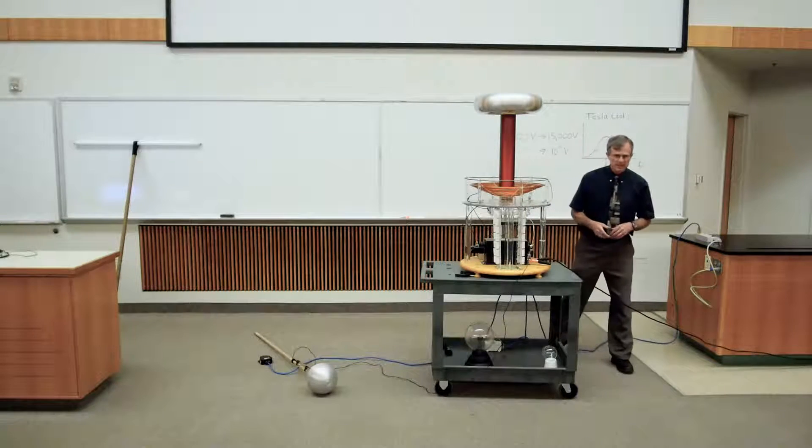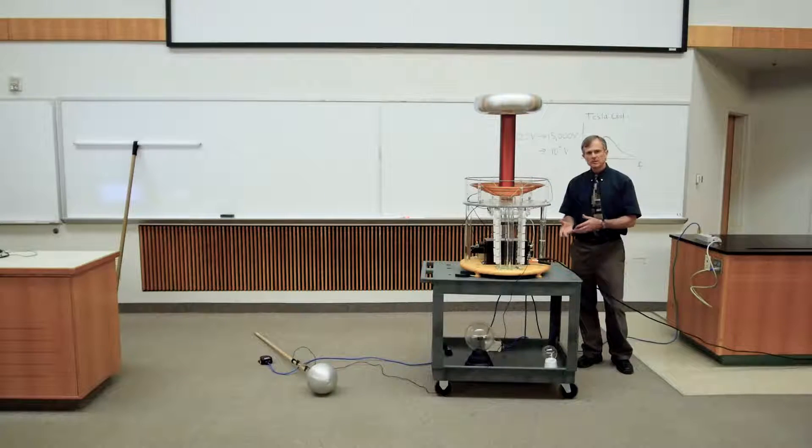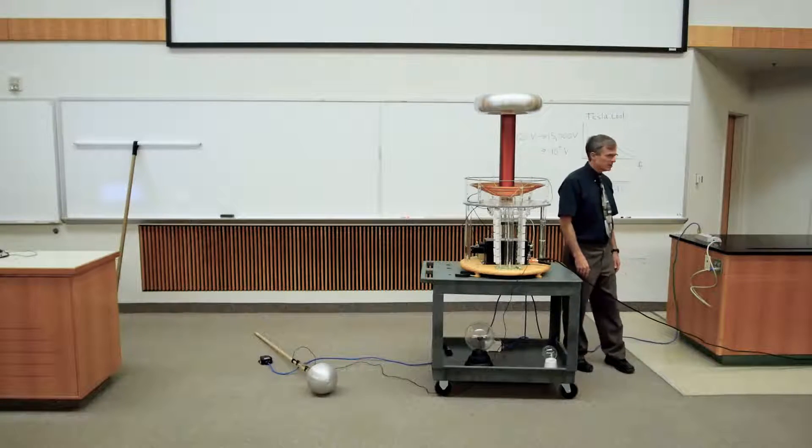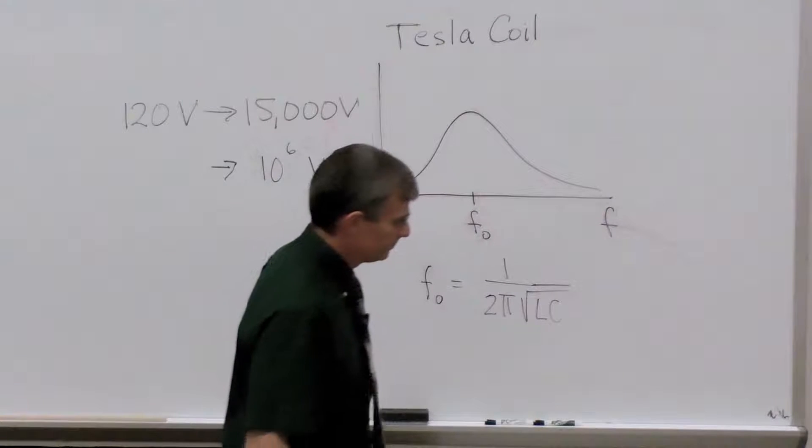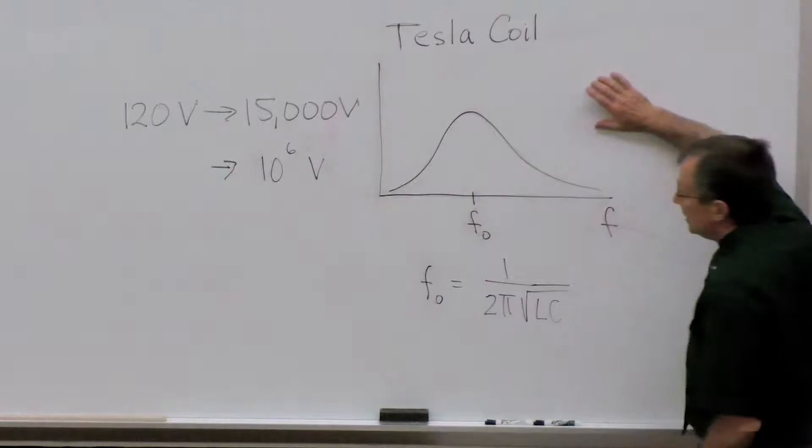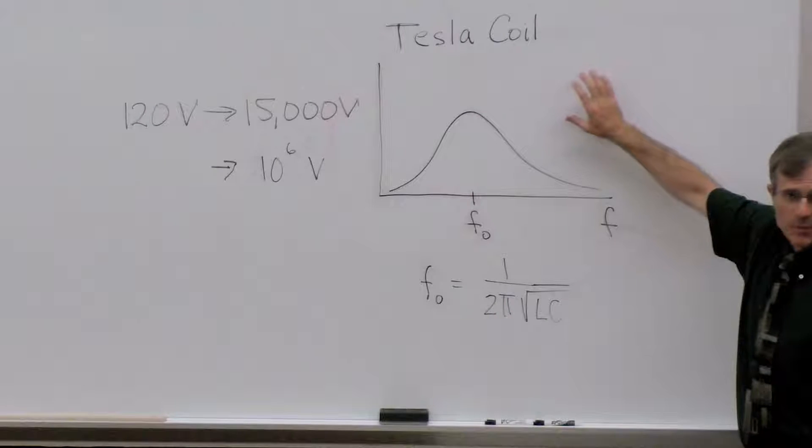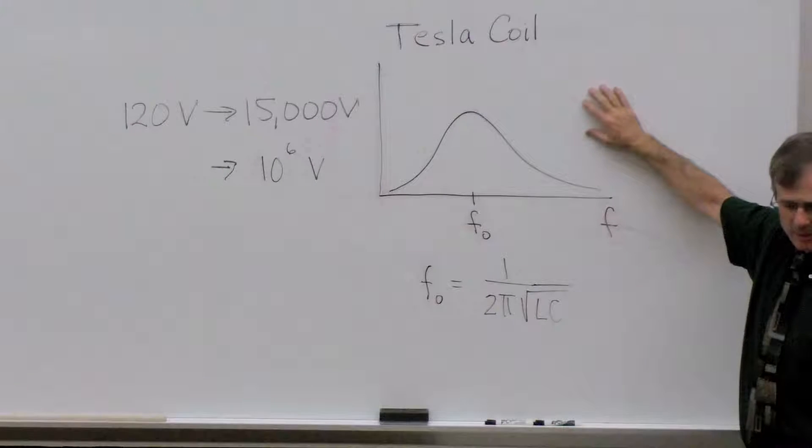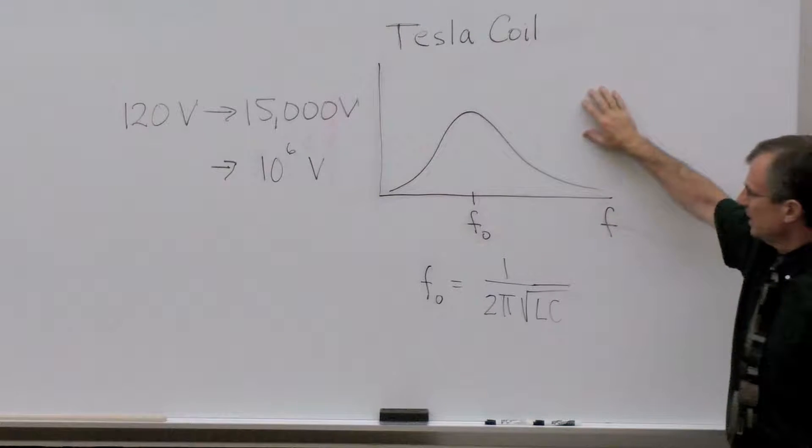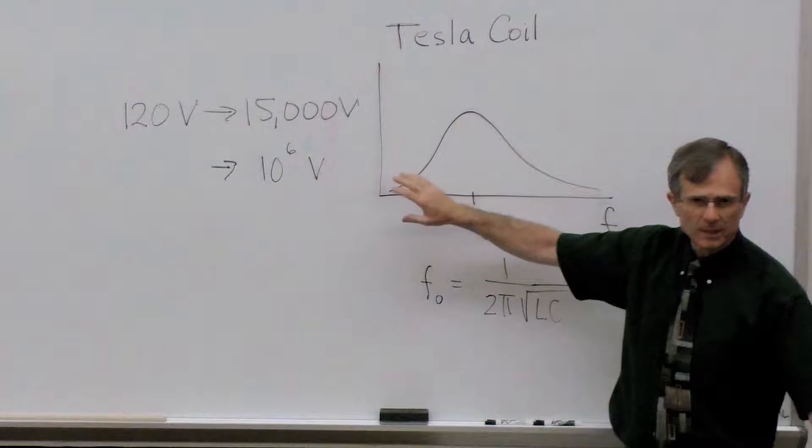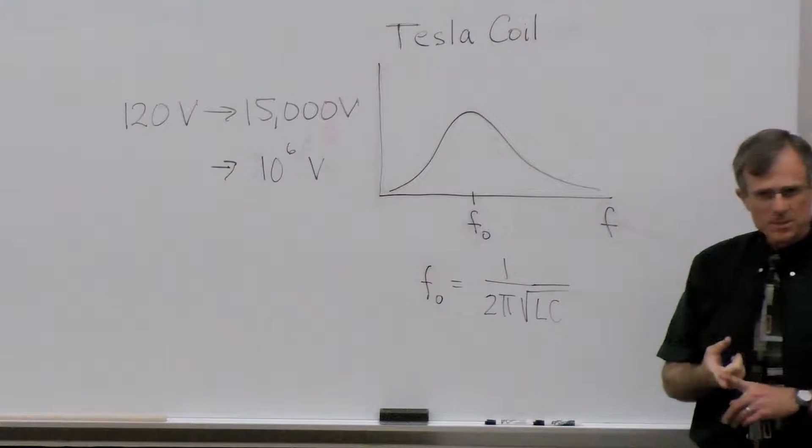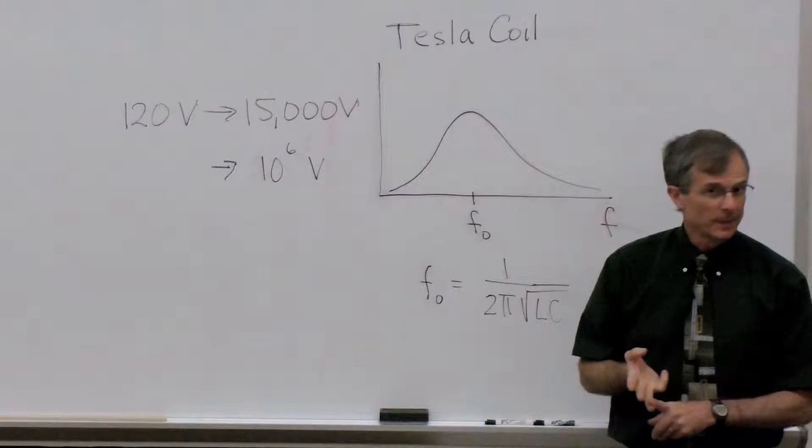And the speed at which that disk spins sets the frequency of this whole Tesla coil. There's also a resonance phenomenon that happens with the Tesla coil. In the LRC circuit, a circuit with a resistor, a capacitor, and an inductor, there's a resonant frequency at which it resonates the best.